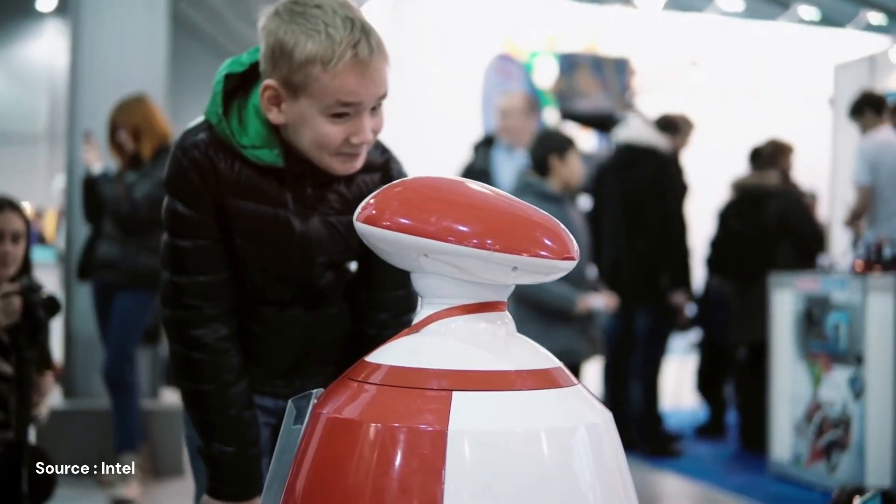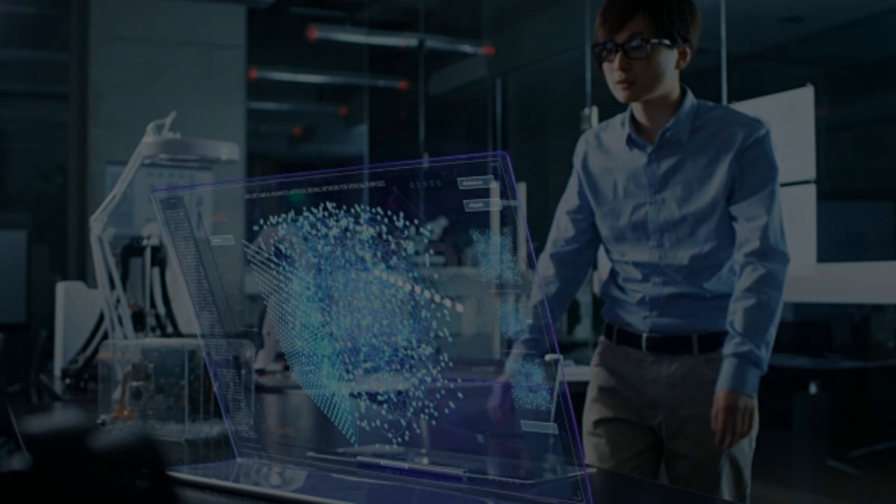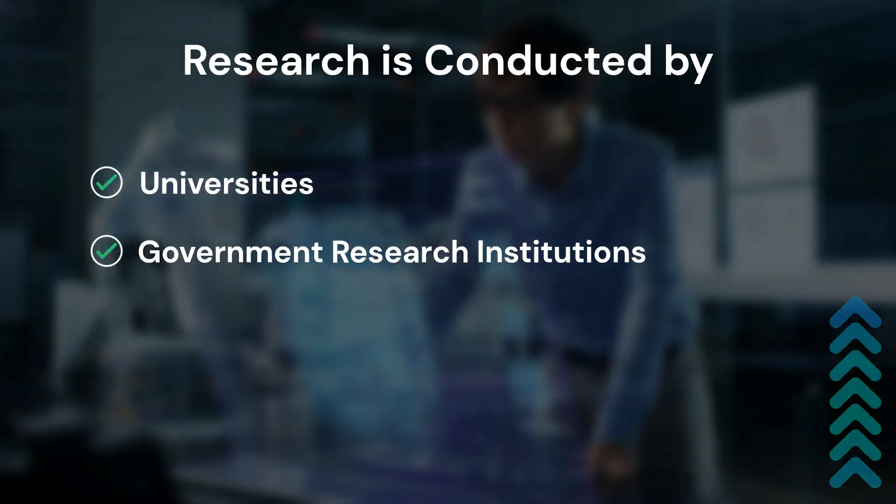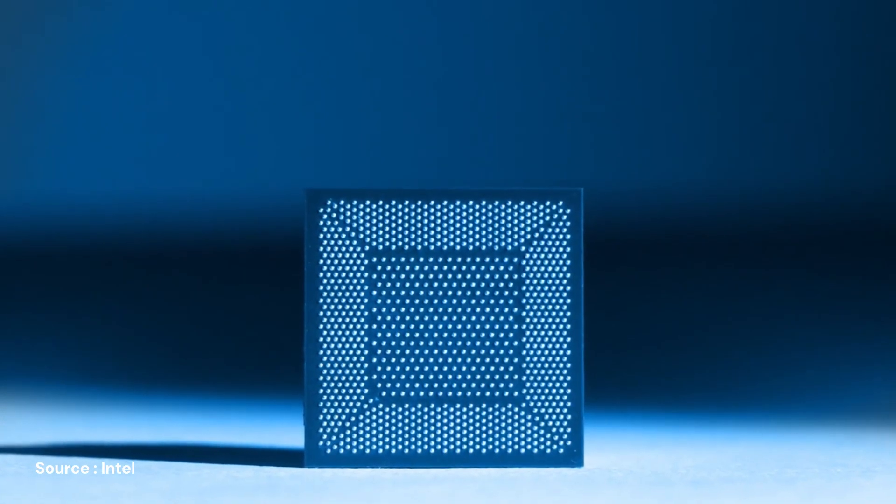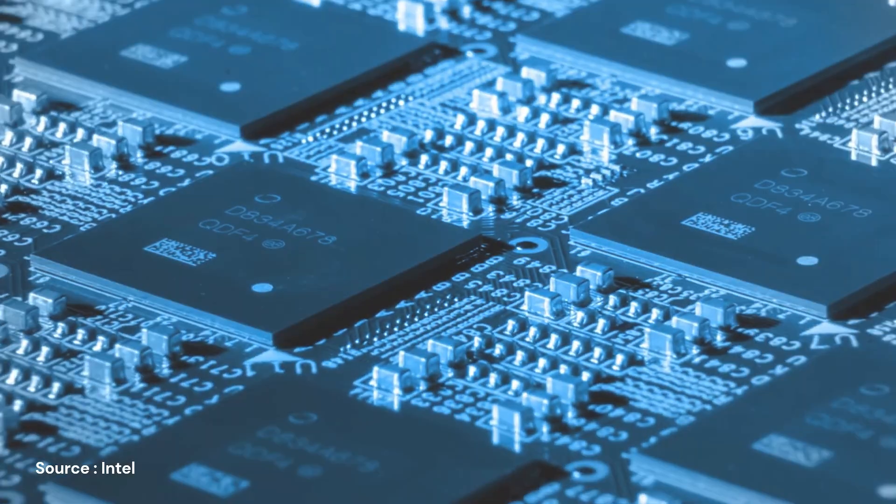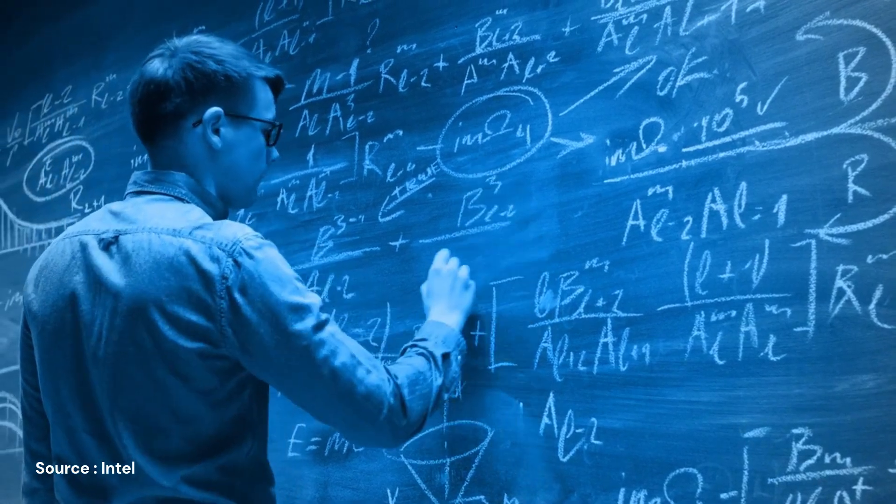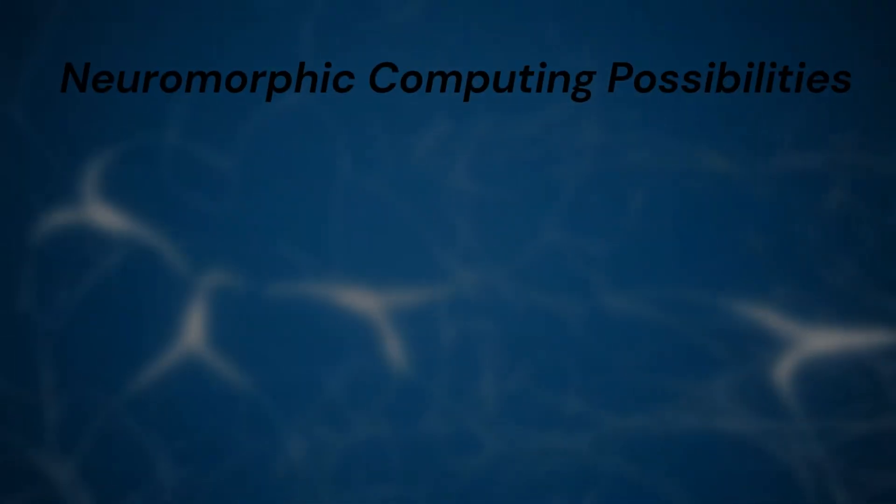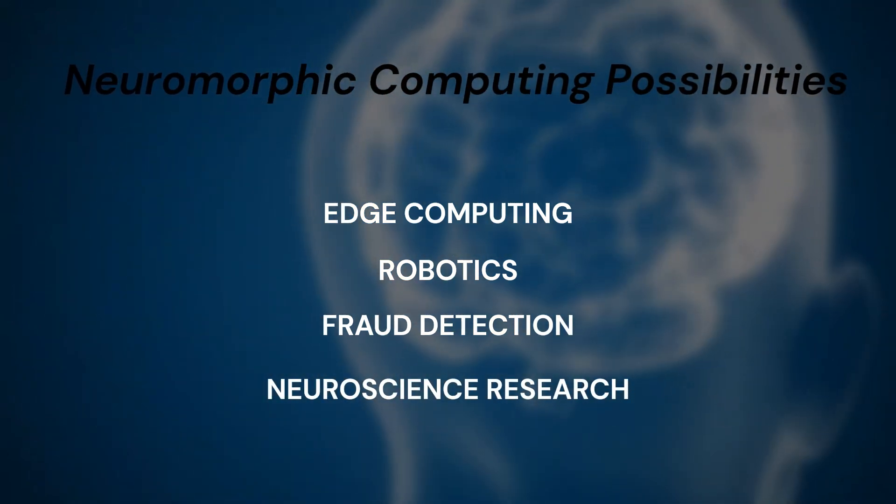The field of neuromorphic computing is nascent science, still in its early stages of development. Research in this domain is currently limited to universities, government research institutes, and major tech companies such as IBM and Intel. The expensive financial utility on neuromorphic computing may take some time to fully materialize. However, these are notable examples demonstrating its role in various sectors. Fields like edge computing, robotics, fraud detection, and neuroscience research have already witnessed the potential of neuromorphic computing.